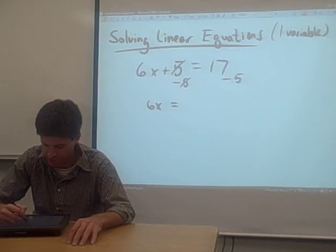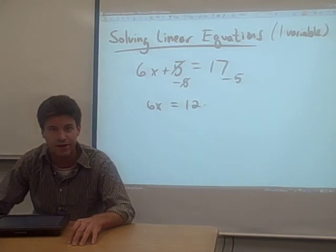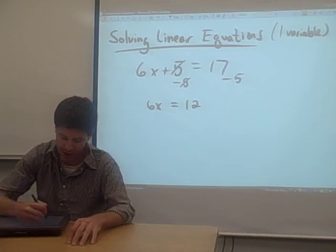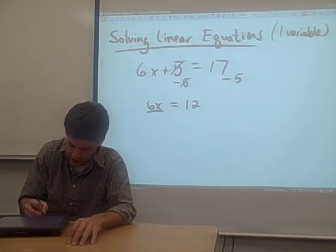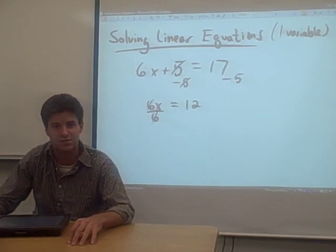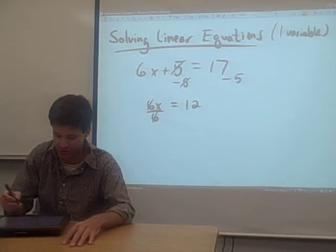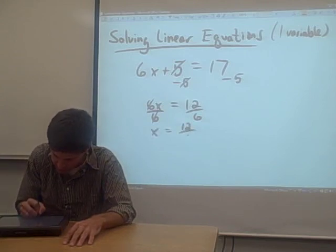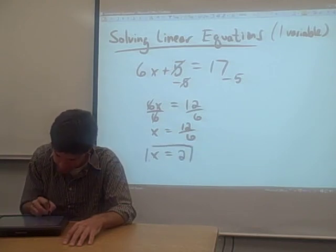Now on the right-hand side of the equation, we just have to subtract. 17 minus 5 equals 12. Great. Now the last step in solving for x is just getting x by itself. x is multiplied by 6 in this case. So what we have to do in order to get rid of that 6 is divide by 6. You'll notice when we do that, that the 6s are just going to cancel each other out. But we can't just divide one side of the equation by 6, we have to divide both sides of the equation by 6. So what we get is x equals 12 over 6, or x equals 2. And that's your answer.